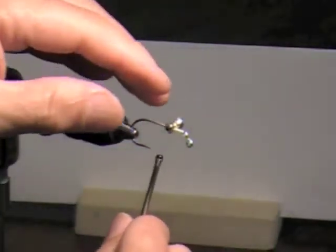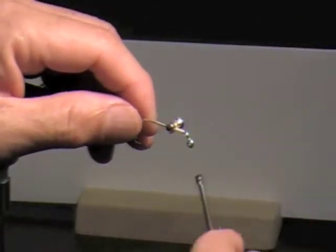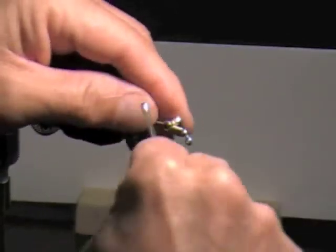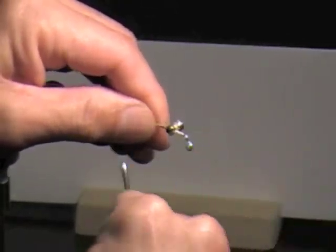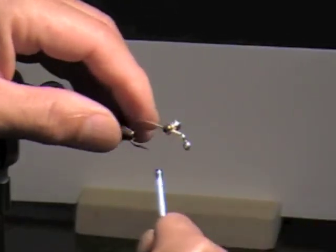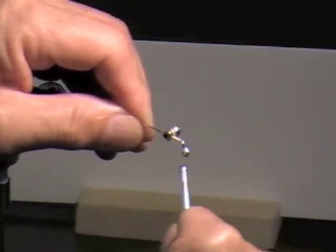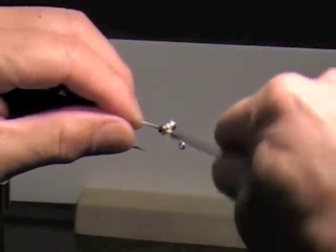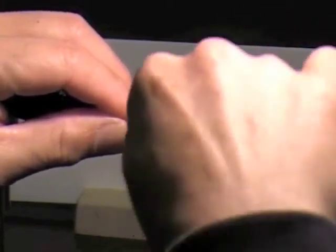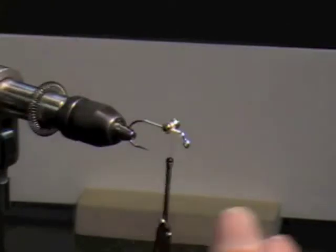If the eyes are crooked, what I'll do is I'll come underneath and I will straighten it out before I go any further. And I do that by putting more crosses on one side than the other.